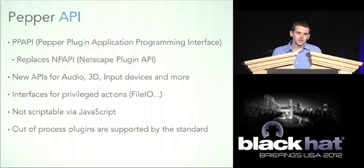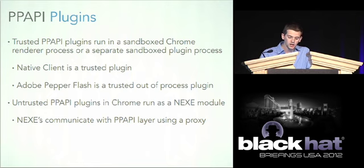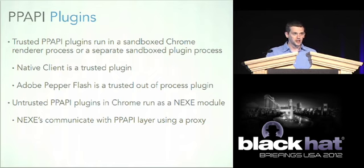There are trusted and untrusted Pepper plug-ins. Trusted Pepper plug-ins live inside the Chrome renderer process or another equally sandboxed Chrome process — the Native Client plug-in itself is a trusted Pepper plug-in living within the Chrome renderer process. A good example of an out-of-process Pepper plug-in is Adobe Pepper Flash, just released a few weeks ago, which lives out of process but within the outer sandbox. Untrusted Pepper plug-ins are Native Client modules — Nexi modules — which communicate with the Chrome renderer process and Pepper implementation via a proxy, which is an important attack surface.